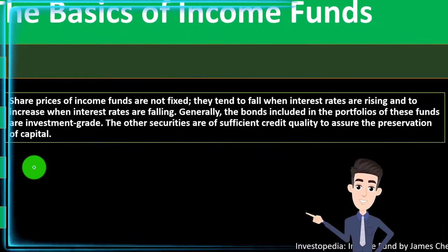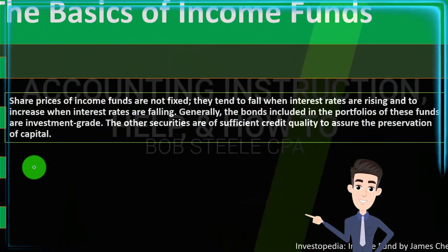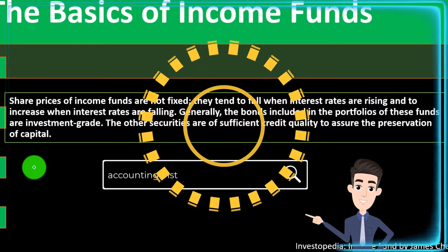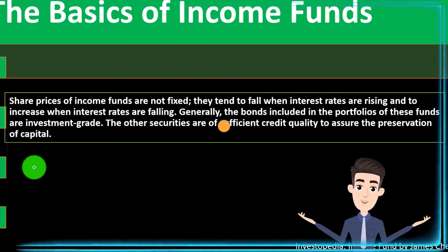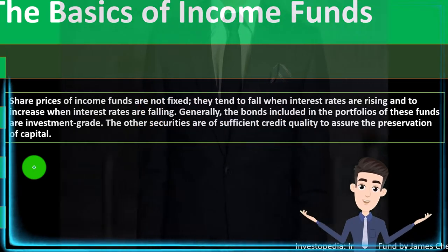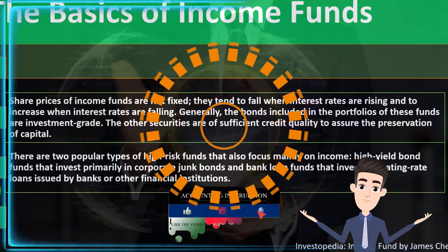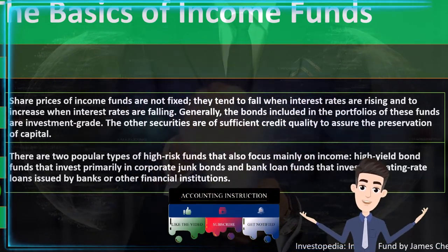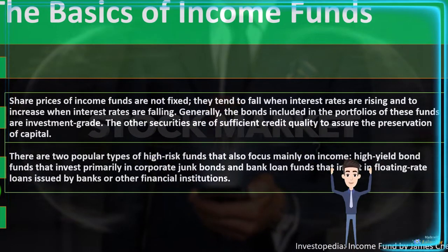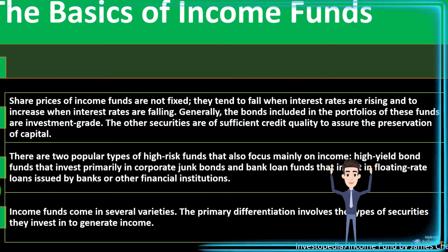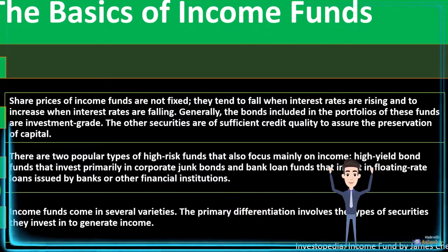The basics of income funds: share prices of income funds are not fixed — they tend to fall when interest rates are rising and increase when interest rates are falling. Generally, the bonds included in the portfolio of these funds are investment grade, and other securities are of sufficient credit quality to assure the preservation of capital. There are two popular types of high-risk funds that also focus mainly on income: high yield bond funds that invest primarily in corporate junk bonds, and bank loan funds that invest in floating rate loans issued by banks or other financial institutions.